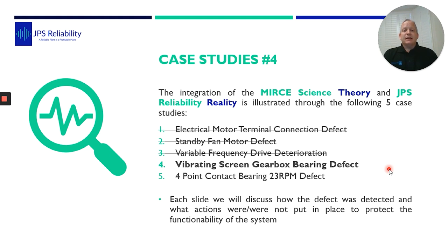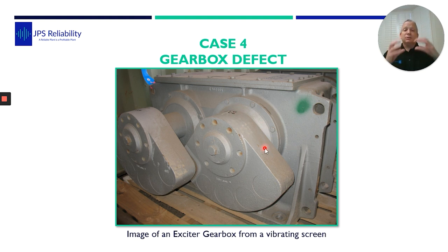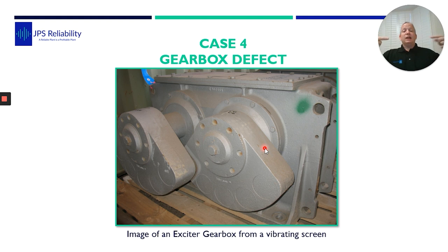So let's get into this case study. Many of you will know this is an exciter gearbox — we have two shafts with concentric weights. They're used in the quarry and mining industry on screens or shakers to shake product down through different sizes. Usually there are one or two across with a shaft, and as you can imagine they vibrate heavily to move the product down the line.